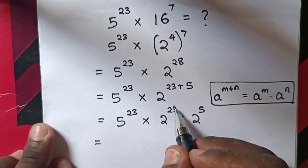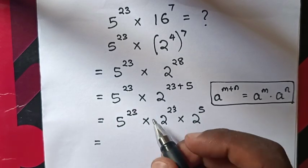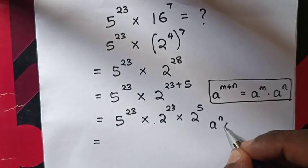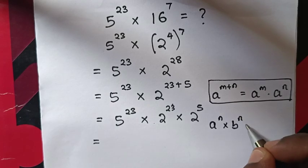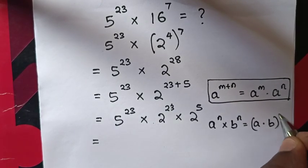From here we'll apply the exponential rule: a^n times b^n equals (a times b)^n.